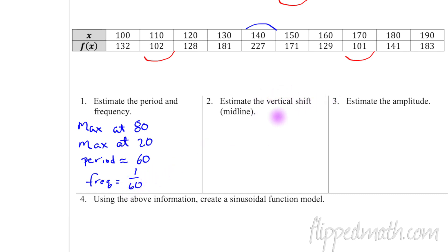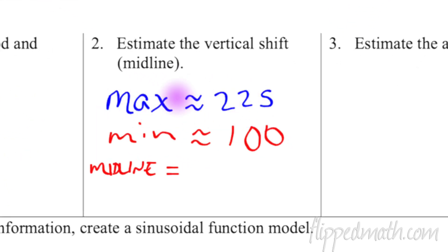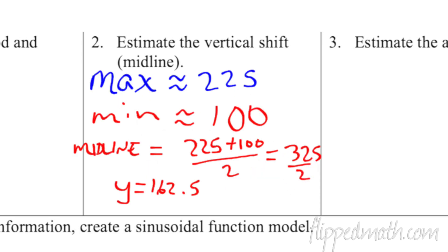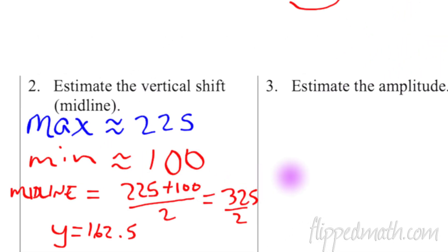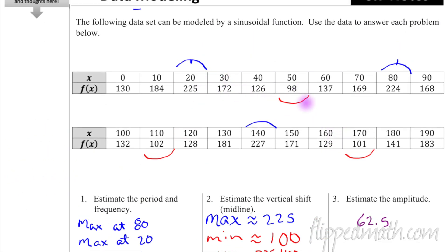Now estimate the vertical shift and midline. With a max of 225 and a min of 100, the midline is the horizontal line right in the center. To find it: (225 + 100) / 2 = 325 / 2 = 162.5. The amplitude is the distance from the midline to the minimum or maximum. Going from 100 to 162.5, the amplitude is about 62.5.